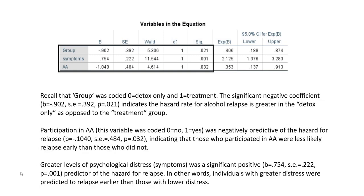Recall that our group variable was coded 0 for detox only and 1 for treatment. The significant negative coefficient indicates that the hazard rate for alcohol relapse is greater in the detox-only group compared to the treatment group. Participation in AA — coded 0 for no and 1 for yes — was negatively predictive of the hazard for relapse, indicating that those who participated in AA were less likely to relapse early. Greater levels of psychological distress was a significant positive predictor of the hazard for relapse, meaning individuals with greater distress were predicted to relapse earlier.